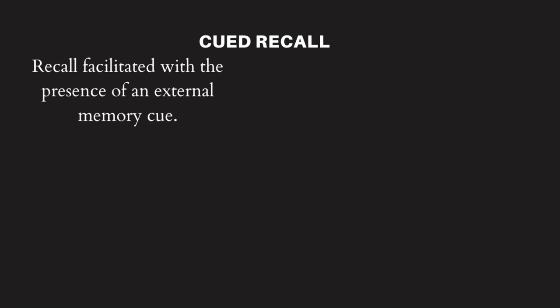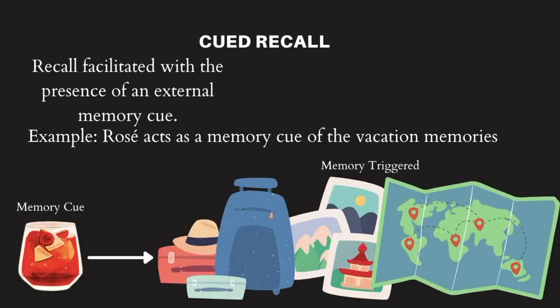For example, imagine you went for a vacation where on a few occasions you consumed a specific type of wine called rosé. Although you did not actively mean for this drink to be associated with the encoding of the vacation memories, the drink becomes a memory cue such that, on a different occasion, when you see or drink rosé, you immediately recall your vacation and all the associated events. This is an example of cued recall wherein rosé becomes a memory cue because it was part of the vacation experience, enabling cued recall of those memories on an unrelated occasion. Memory cues play a very important role in scaffolding memory retrieval.